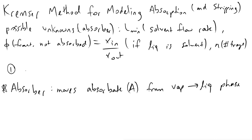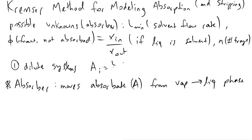The first condition is that we are working with dilute systems. And this is important because if our system is dilute, we can define something called an absorption factor and equate that to L over V times K, where L is the liquid solvent flow rate, V is the vapor phase flow rate, and K is the equilibrium constant between the liquid and the vapor phases of our absorbate. If our system is dilute, we can say that this is a constant for all of our trays in our system.